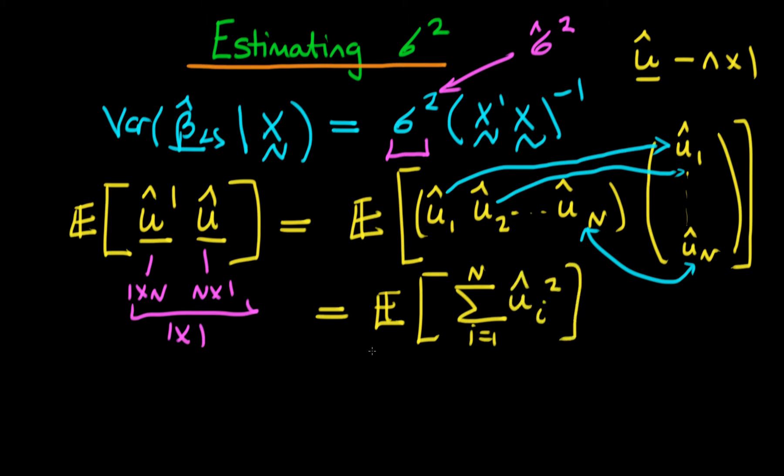And because there aren't going to be any sort of cross terms here because we're assuming that they're independent, this should just mean that the expectation of u hat prime times u hat is equal to the sum from i equals 1 to n of the expected value of u hat i all squared.